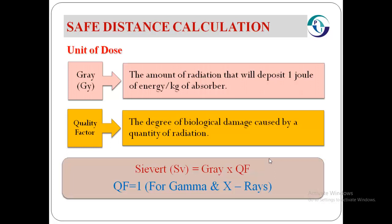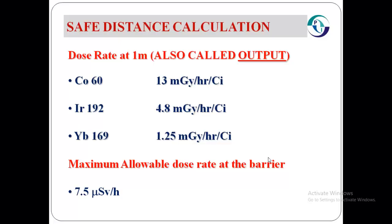So Sievert equals Gray times quality factor. The quality factor for gamma and x-rays is equal to one. In order to calculate the safe distance for a certain type of source, we must know about the dose rate.